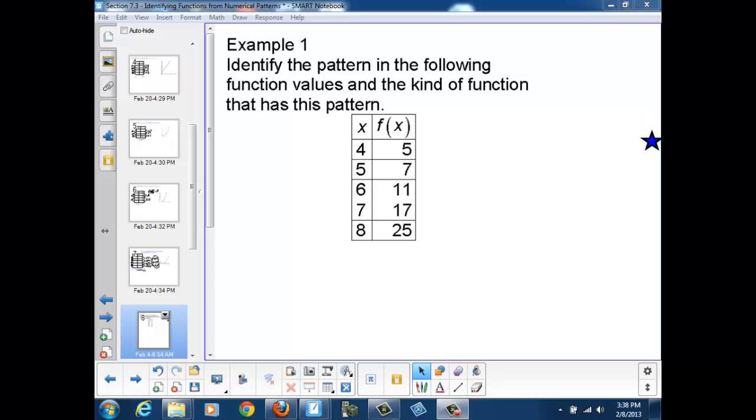Now that we've established these four types of patterns, we can use them to determine what kind of function we're working with if we're given a table of function values. So here's an example. We have a table of values and we want to identify the pattern and the kind of function that has this pattern.